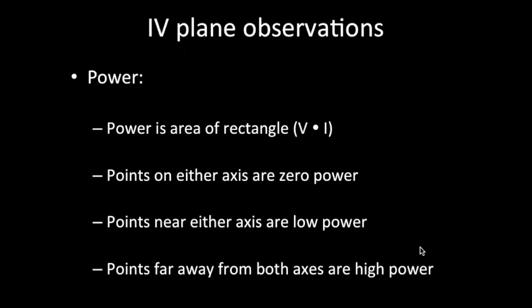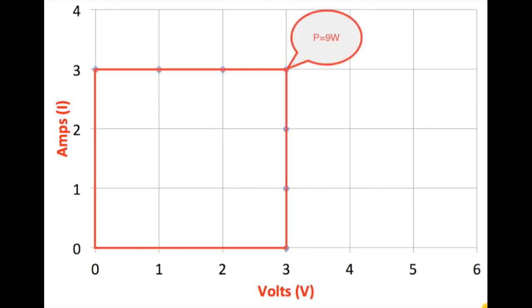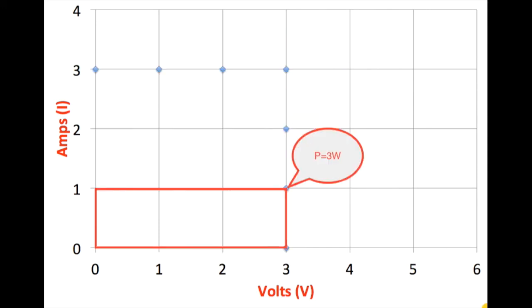So now some observations about power on this plane. So power is V times I, so that actually is the area of a rectangle where the point that you're looking at trying to figure out the power is in the upper right corner. It happens to be a sort of useful way to just sort of visualize what the power is. So points on either axis are zero power, points near either axis are low power, and points far away from both axes are high power. So here's a little sort of animation that shows what that is. This is a point that again is on the vertical axis at zero power. This is basically a rectangle that's just a line because it has zero area. This point has power of three watts, and this is sort of a smaller rectangle, slightly bigger rectangle, six watts, nine watts, back to six watts, three watts, back to zero.